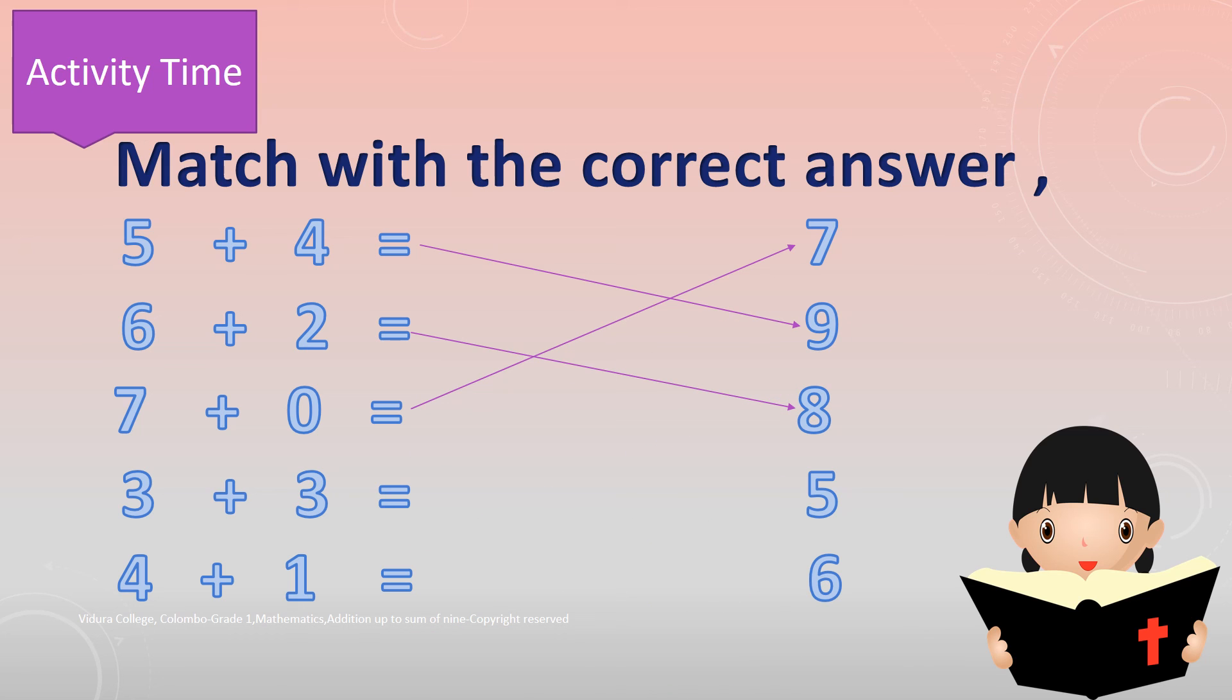4 plus 3 is equal to 6. Last one. 4 plus 1 is equal to 5.